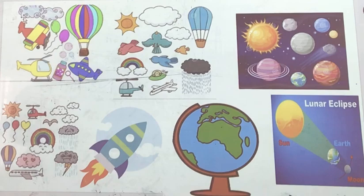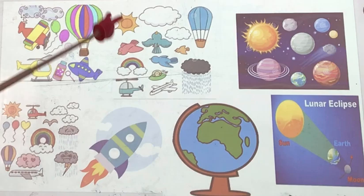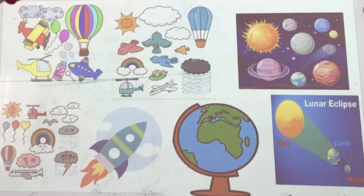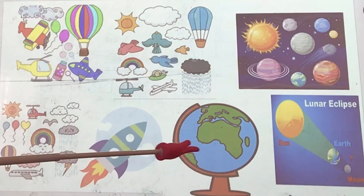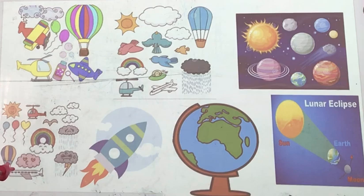We have the sun, the moon, the rainbow, the wind, the clouds, the rocket, the stars, the hot air balloon, the birds, the rain, the storm, the satellites, the globe, the airplane, the helicopter — all of these things we can find in the sky. So the sky is up in the sky, or in the air. Thank you.